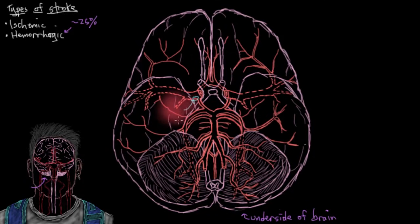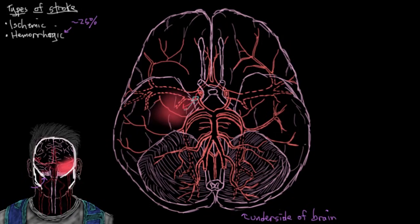That's bad for two reasons. One, you're losing blood from within your cerebral circulation. And if you start bleeding into your cranium, that blood leaking out of your vessels is going to take up room. Your cranium is a closed space, so your blood has nowhere to go. If you start bleeding into this closed cranium space, you're going to increase pressure in there and actually start to compress your brain.